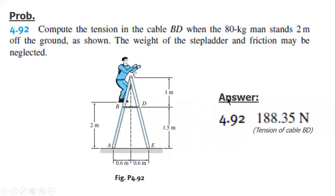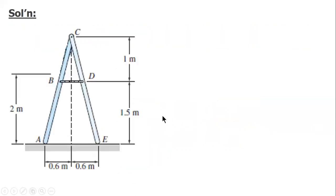I'm going to show the solution on how to solve for the tension in cable BD. First, you will replace the man by its weight acting at this point, so replace it with a vertical force. 80 kilograms times 9.81 meters per second squared is equal to 784.8 newtons.